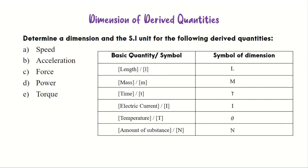If you look at the table in the video, for the basic quantity length, we put the length in a bracket, and the symbol of length we also put in a bracket — or you can express it as big L, or capital letter L. Now let's start with the first question: find the dimension of speed and the SI unit of speed.